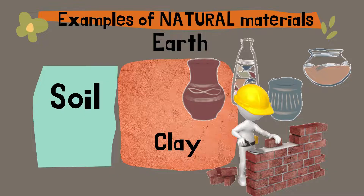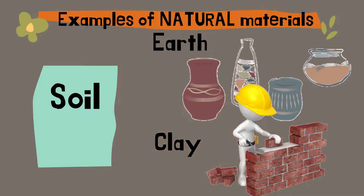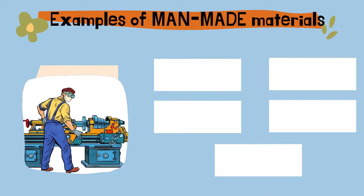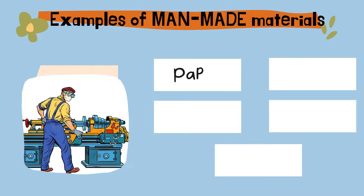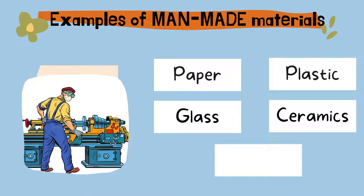After seeing the examples of natural materials, let us move to man-made materials. Examples of man-made materials include paper, plastic, glass, ceramics, and concrete.